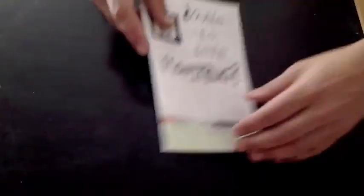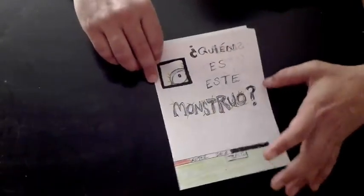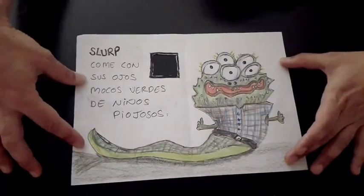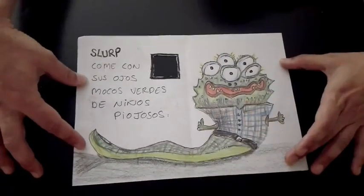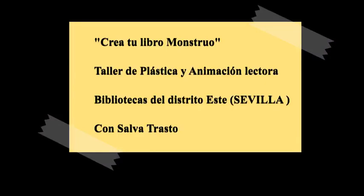¿O este otro? '¿Quién es este monstruo?' Este tiene poros. ¡Slorp! Come con sus ojos mocos verdes de niños piojosos. ¡Oooom! ¡Slorp!